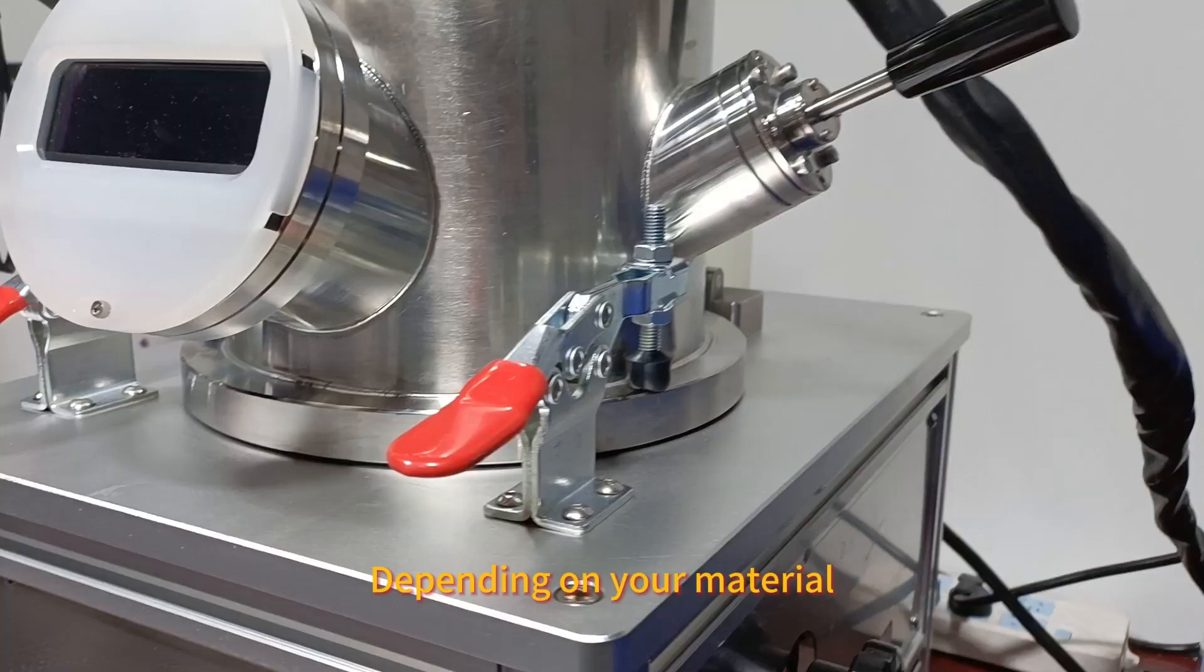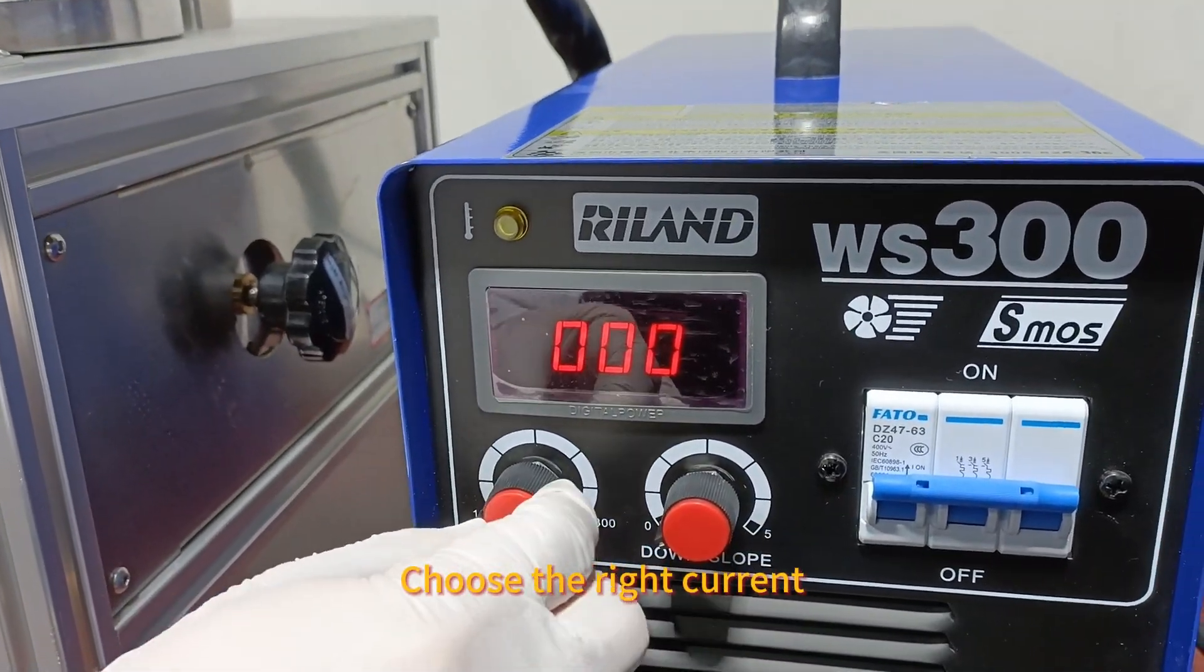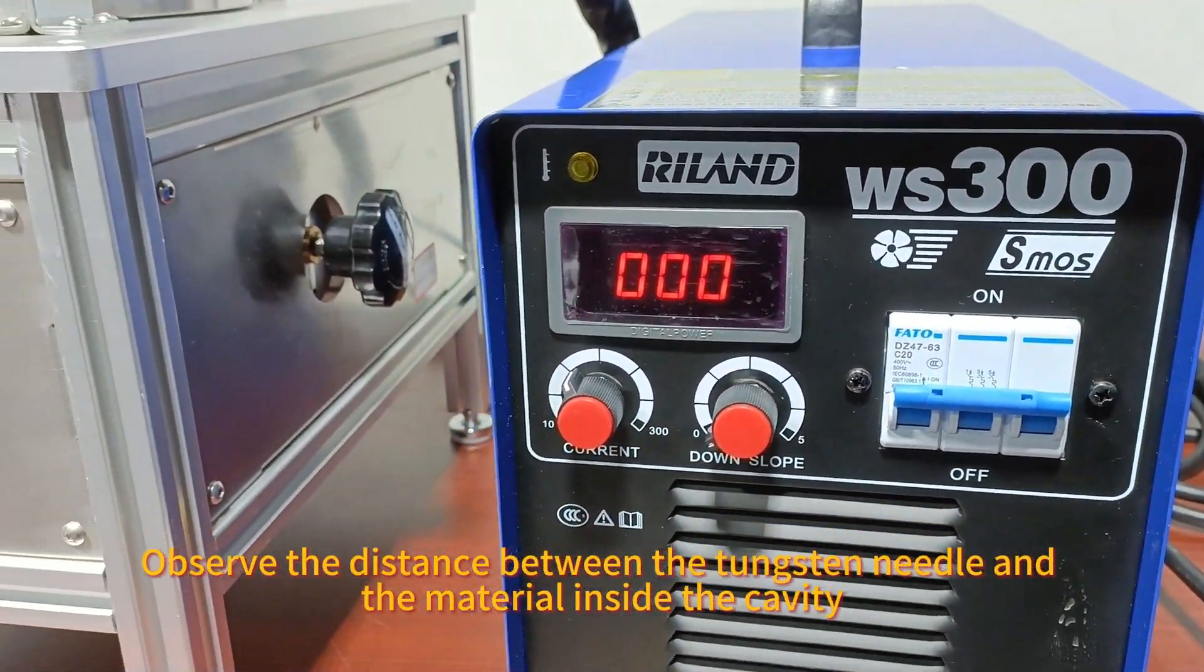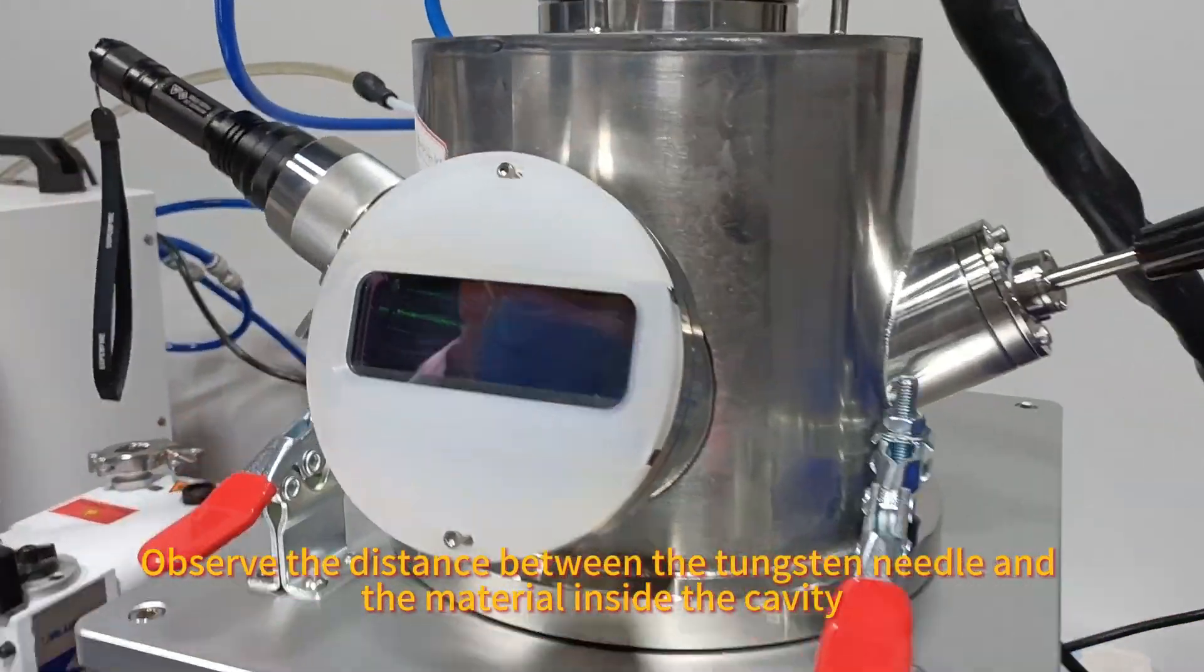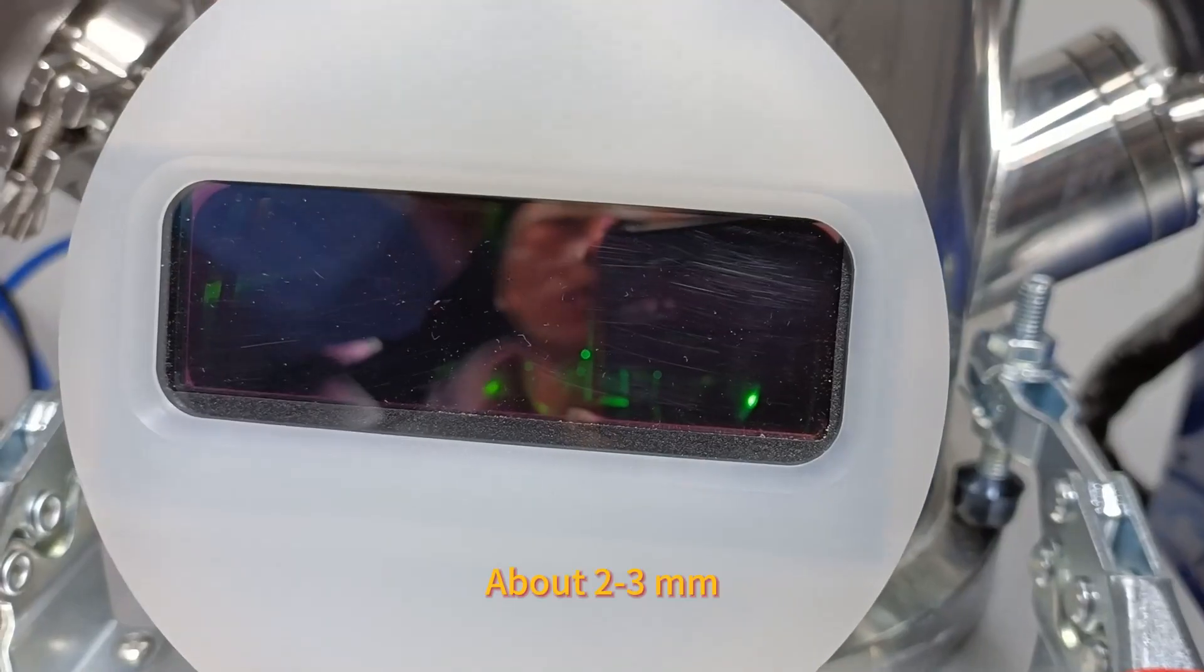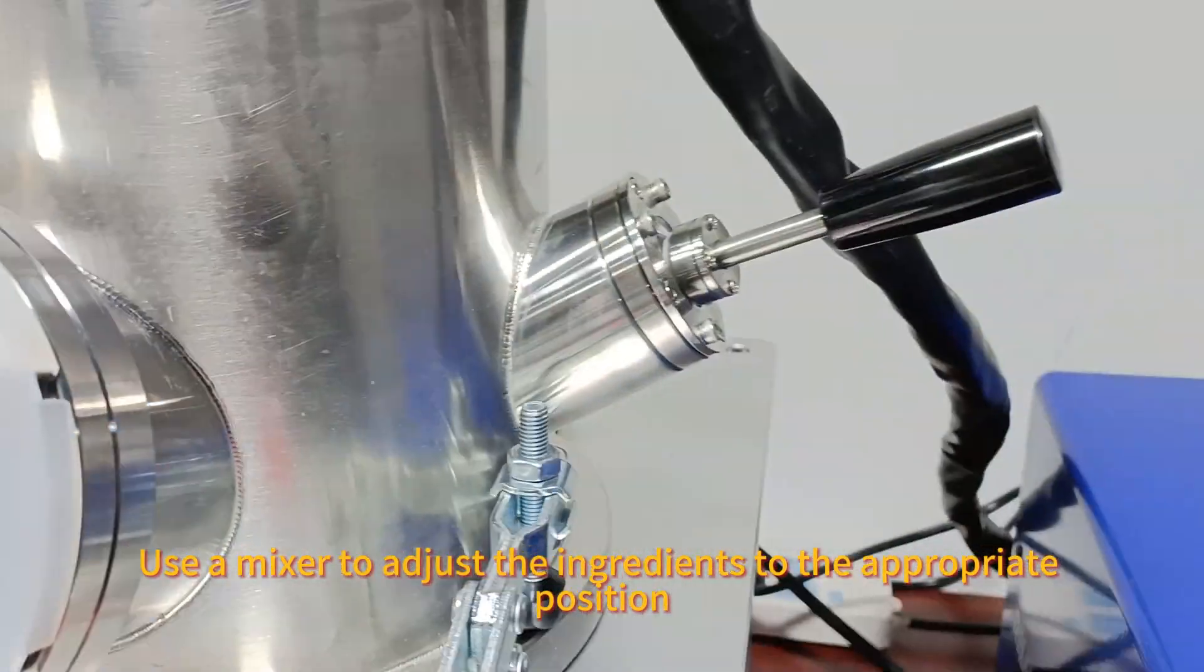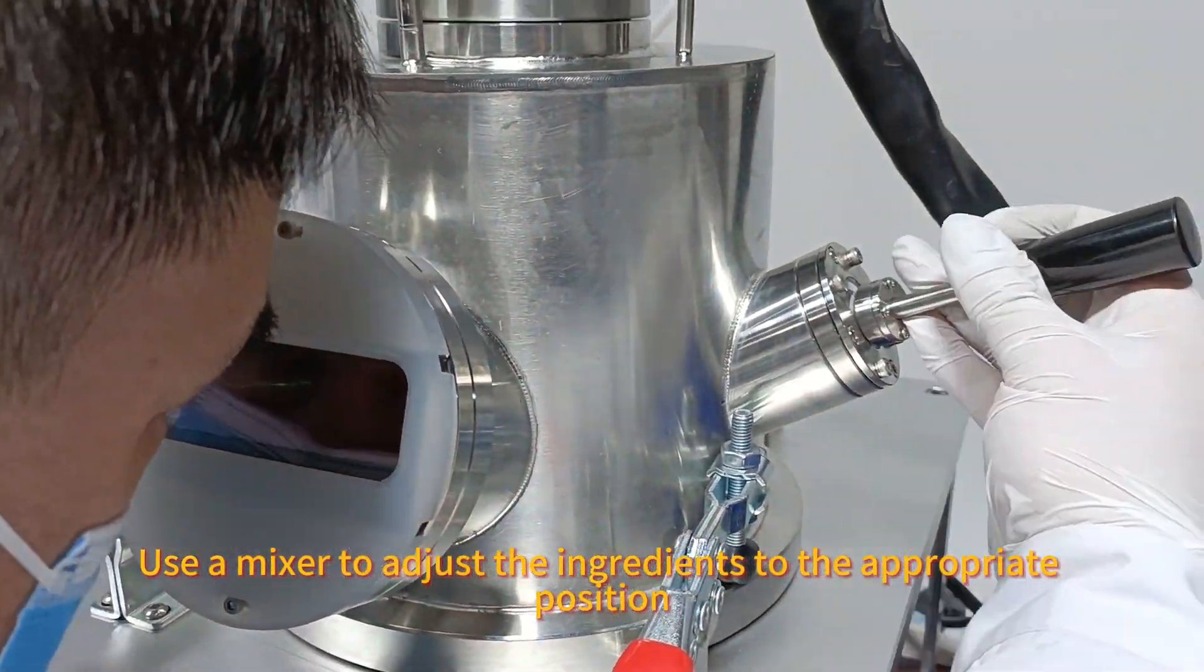Depending on your material, choose the right current. Observe the distance between the tungsten needle and the material inside the cavity, about 2-3 millimeters. Use a mixer to adjust the ingredients to the appropriate position.